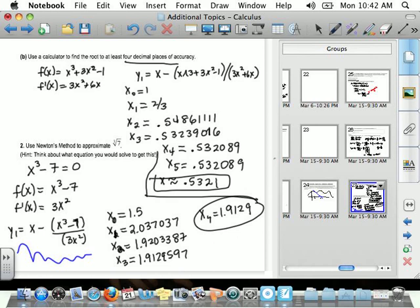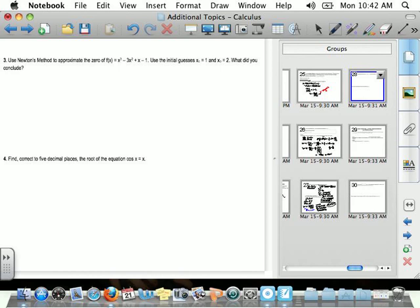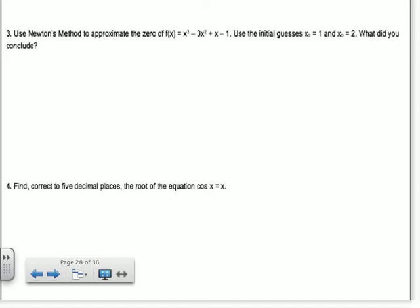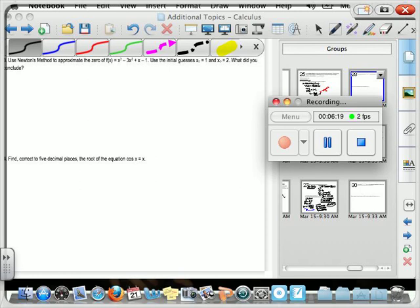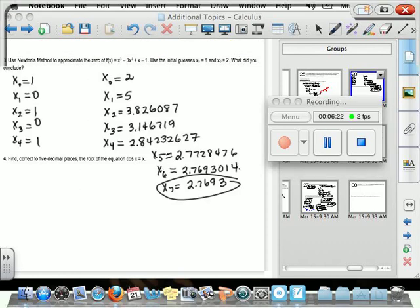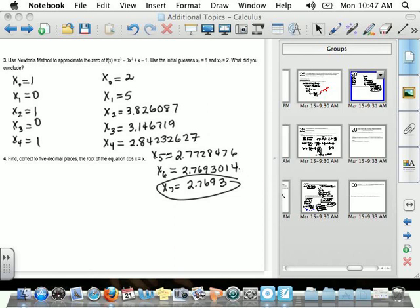Okay, so it makes sense. Do we have one more example? Two more? Use Newton's method to approximate the zero of F of X equals X cubed minus 3X squared plus X minus 1. Use the initial guess as X sub 0 equals 1, X sub 0 equals 2. What did you conclude? So one of them is probably going to give you not a good answer. I'm guessing one of the other ones does work. So go ahead and do both. I'll let you guys try it on your own. So there's all my values for number 3. So both were bad guesses.